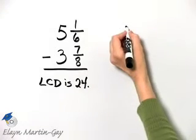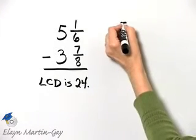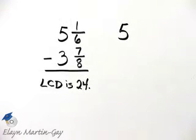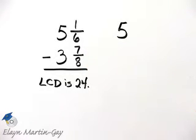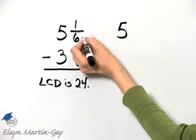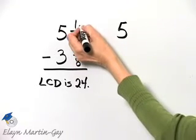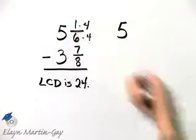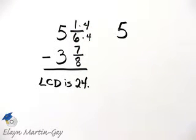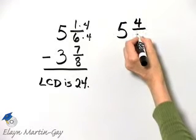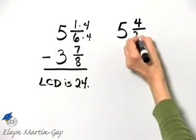So we'll rewrite these. Now what would I multiply 1/6 by? In other words, what would I multiply the denominator of 6 by in order to have a product of 24? Well, I multiply 6 by 4, and if I do that in the denominator, I must also do that in the numerator. So I have 1 times 4 is 4, over 6 times 4, or 24.